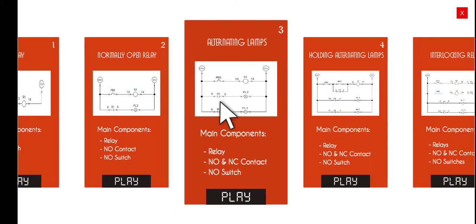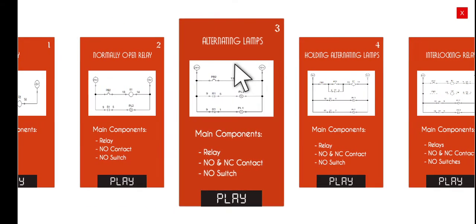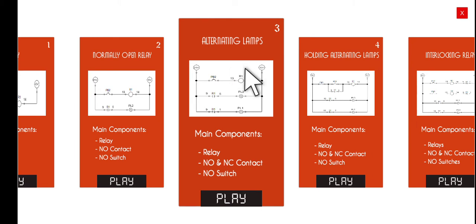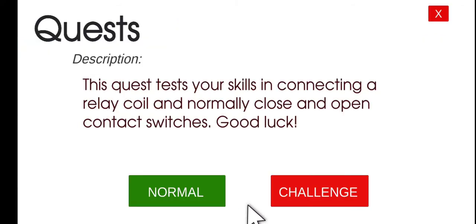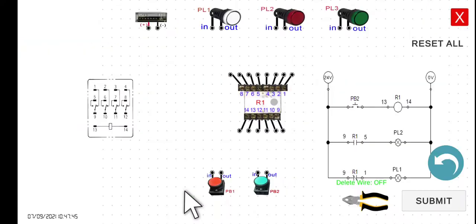The third activity is entitled 'Alternating Lamps.' We will combine the normally open and normally closed contact of a relay — in this particular case, Relay Number 1. Click Play and then Normal Mode, and let's explain the functionality of this circuit.